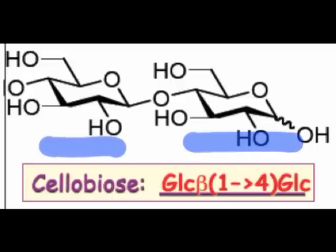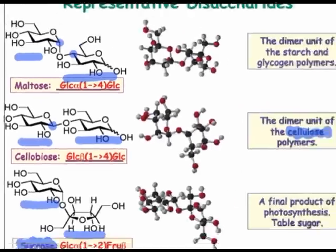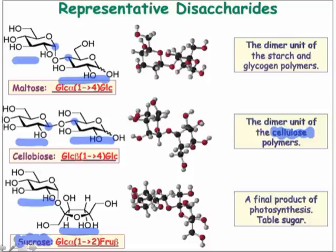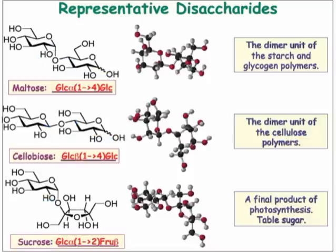Cellobiose contains two glucose monomers linked through their one and four positions. In the next few webcasts, we'll concern ourselves with lactose, whose structure I'll leave a mystery for the moment.